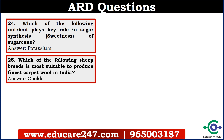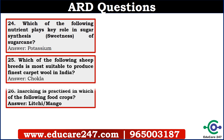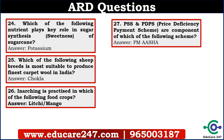The twenty-sixth question is: Inarching is practiced in which of the following food crops? The answer is Lychee. Some students say the answer should be mango, but some are claiming mango was not in the options, so I have put both the options. The twenty-seventh question is: price support scheme and price deficiency payment scheme are components of which of the following scheme? It was a very simple question. The answer is PMASA.